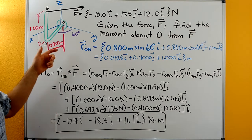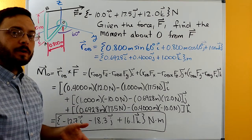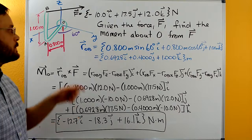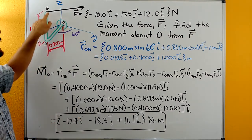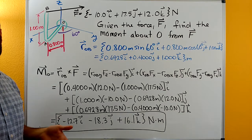So to find the moment we're going to do a cross product and we need to find a position vector that goes from our point that we're finding the moment about up to any point on the line of action of our force.